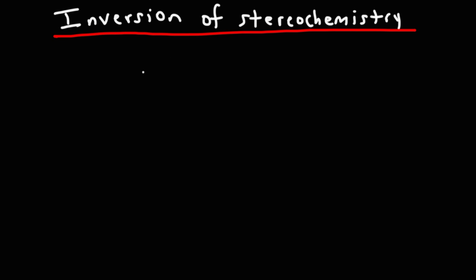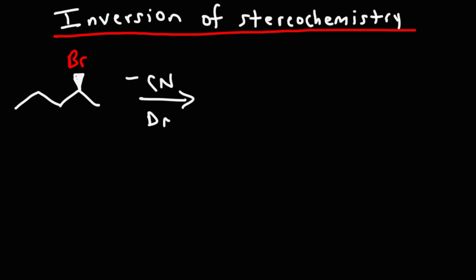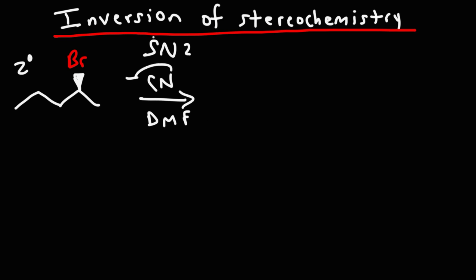Let's say we have 2-bromopentane and we're going to react it with cyanide in a polar aprotic solvent — we'll choose DMF. This is going to be an SN2 reaction. We have a secondary alkyl halide; this carbon is attached to two other carbon atoms, and we have a polar aprotic solvent which favors SN2 over SN1 reactions. And we have a good nucleophile.